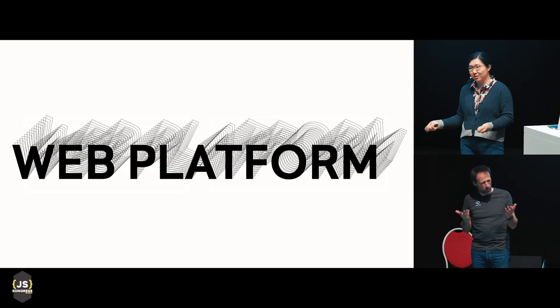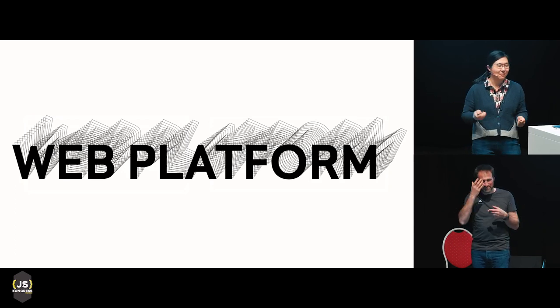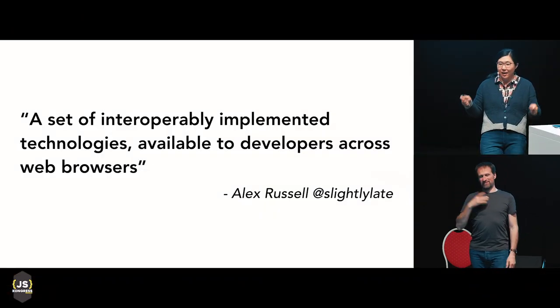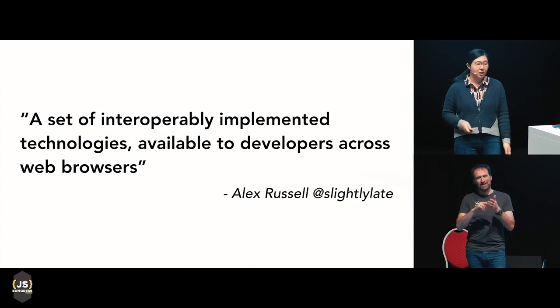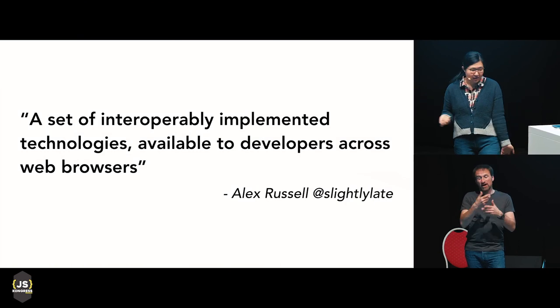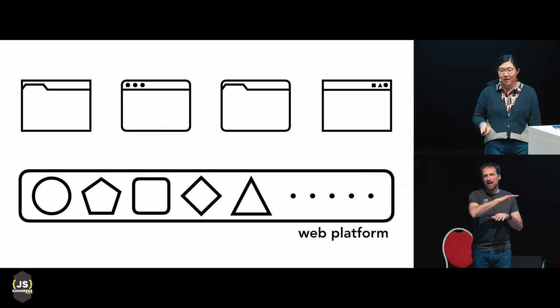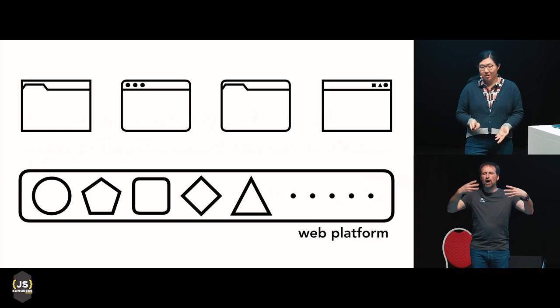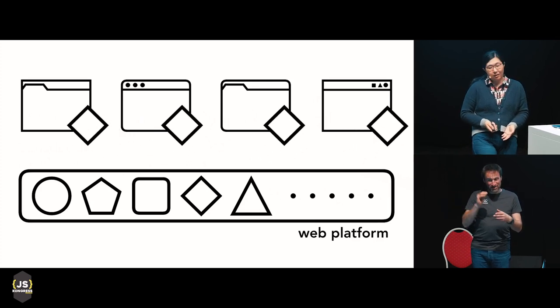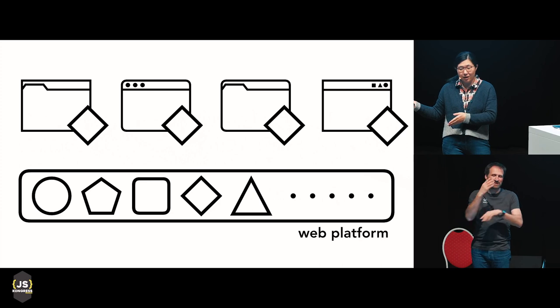What is the web platform? It's in the name of my team. I asked Alex Russell, who is a technical lead for the web standards group inside of Chrome, about what even is a web platform. His definition, which I really like, is: the web platform is a set of interoperably implemented technologies available to developers across web browsers. To visualize — at the bottom you see a set of features, and you have many varieties of browsers. One feature in the web platform is implemented in many different browsers, and thus it's part of the web platform.